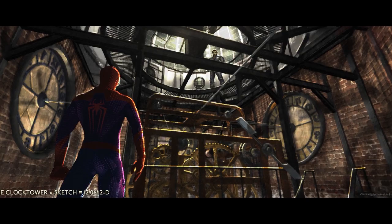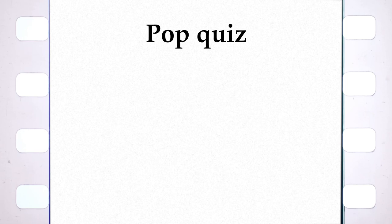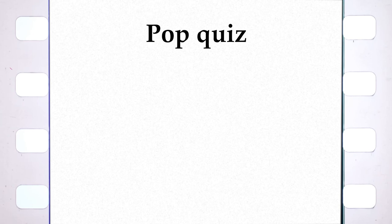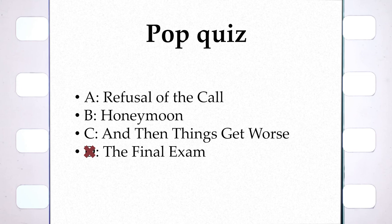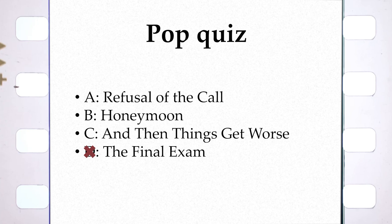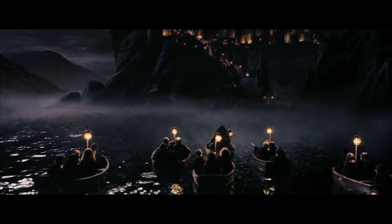Pop quiz time. Let's say you're making a movie about a boy wizard — the call to adventure is an invitation to a magical school. At what point in three-act structure should the boy arrive at the school? A: the refusal of the call; B: the honeymoon; C: everything gets worse; or D: the final exam. It can't be D — we'd be pouring out of the cinema halfway through. It can't be A — he has to choose to go and the refusal is all about refusing to choose. If you choose C, it undercuts the fun of exploring the magical school at a slower pace and lower stakes. So it must be B. How far into Harry Potter and the Philosopher's Stone does Harry arrive at Hogwarts? 26.4% — the start of act two. Good job.